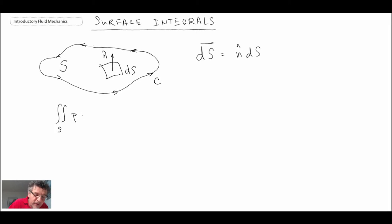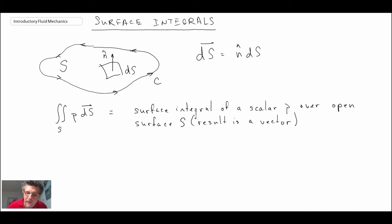And let's assume that we're doing a surface integral with a scalar to begin with. So when you do this, you take a scalar over the surface, and in this case it's an open surface, it will result in a vector.